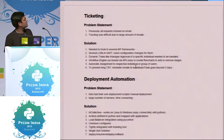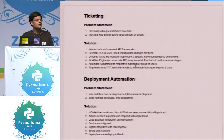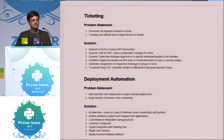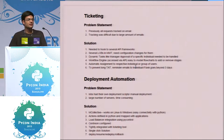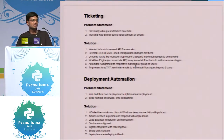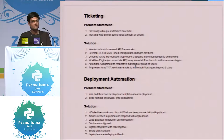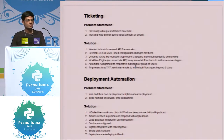In ticketing, the problem statement we had was that all requests in the organization — for any user ID creations or anything — were tracked on email. Requests were raised on email to managers, then forwarded to the next respective person. Since everything was tracked on email and due to the large volume of emails, the turnaround time was large. To fix that, we created a ticketing tool.